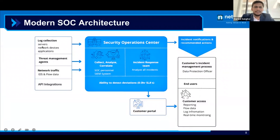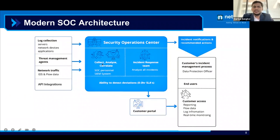A generic modern SOC architecture looks like this: we collect logs from servers, network devices, application servers, and cloud data. Where logs cannot be shared directly, the SOC should support API integration — for example, for SaaS applications like Office 365 or G Suite. Threat management agents can be used in an agent-based architecture to fetch logs from critical devices and share them to the analytics server.